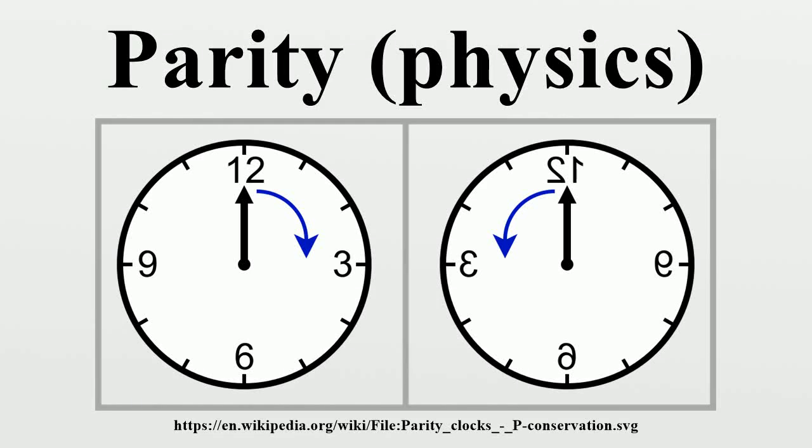In quantum mechanics, a parity transformation is the flip in the sign of one spatial coordinate. In three dimensions, it is also often described by the simultaneous flip in the sign of all three spatial coordinates.